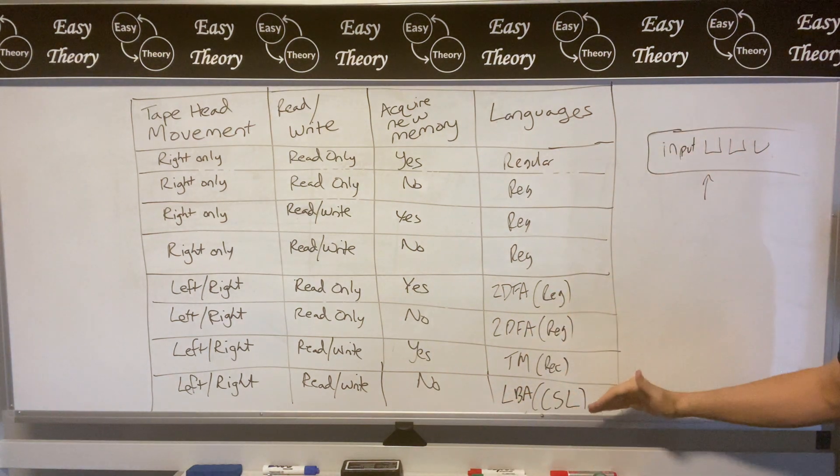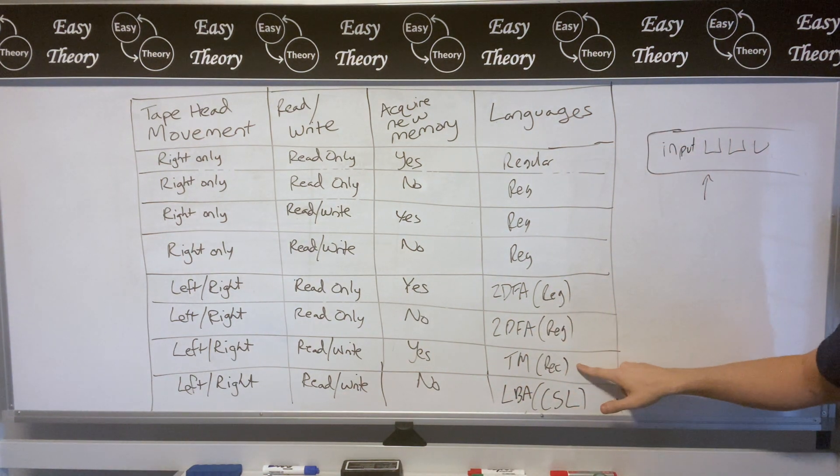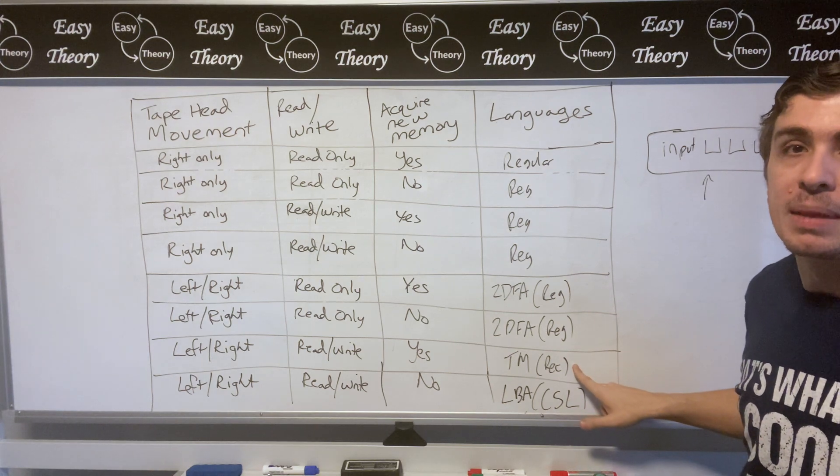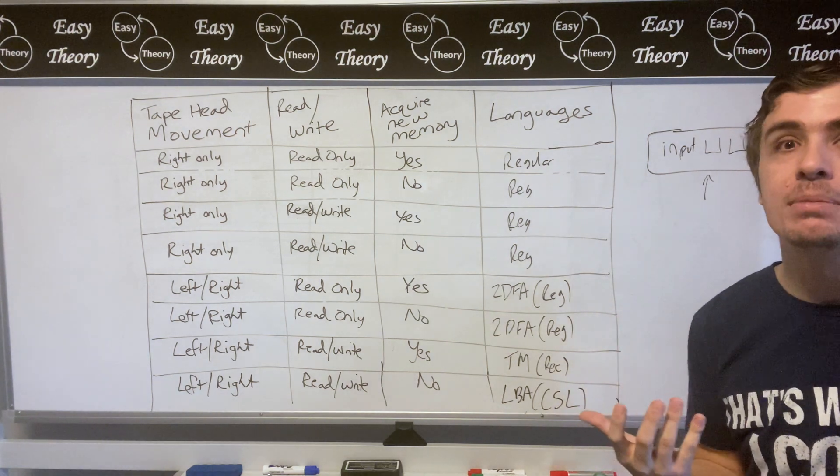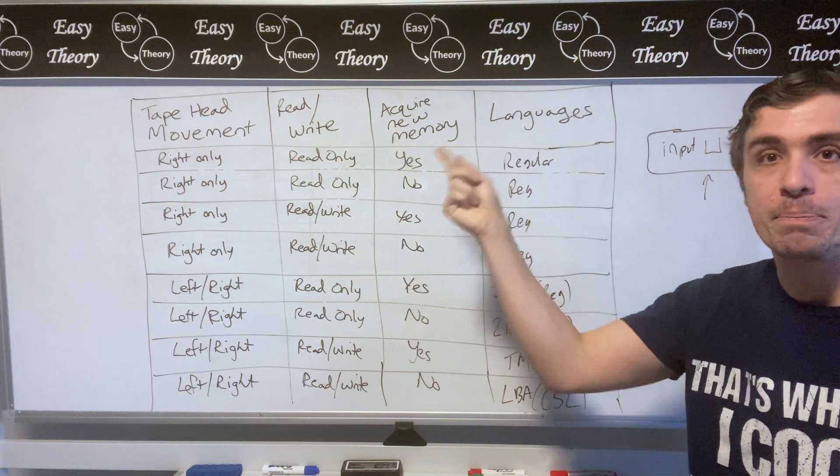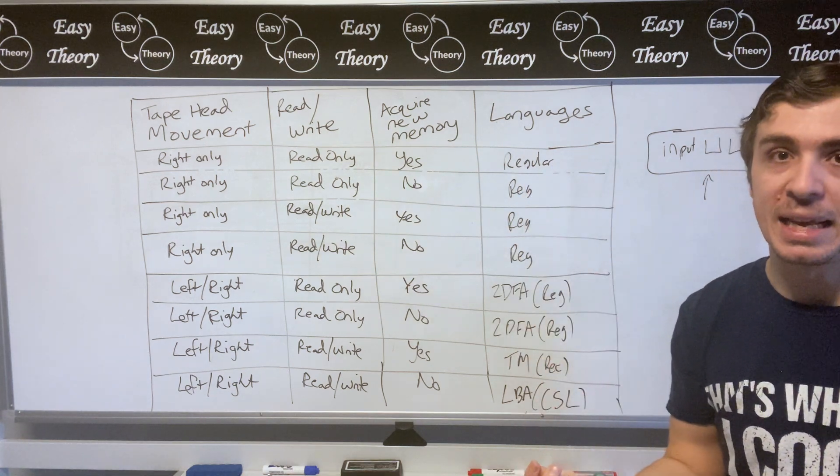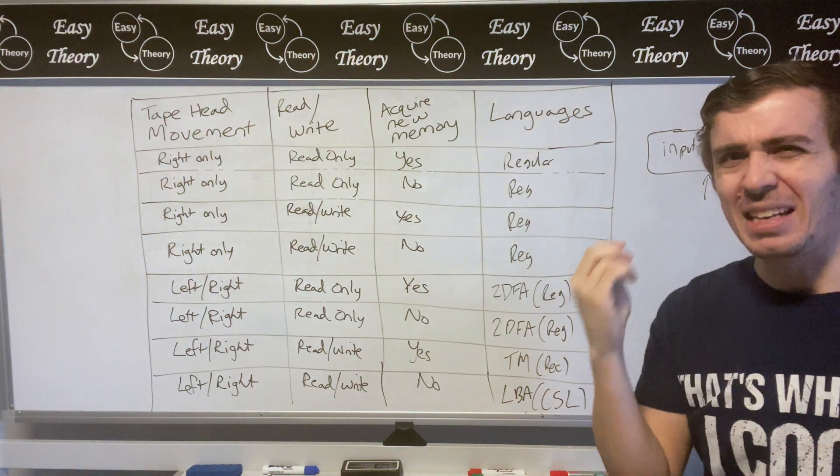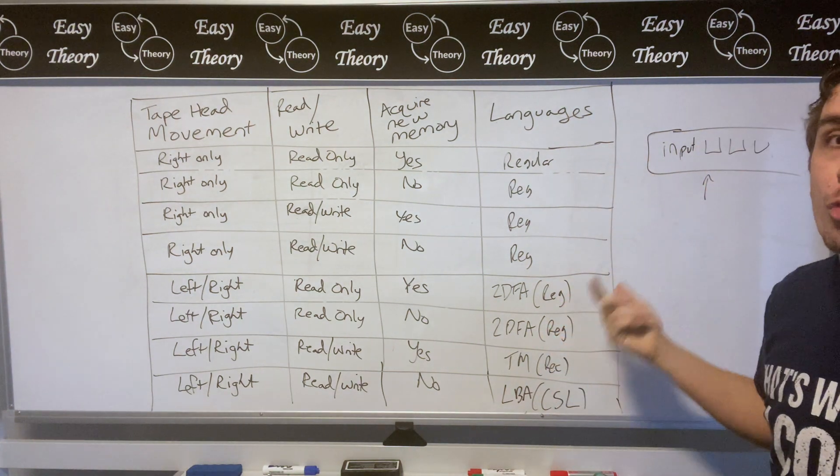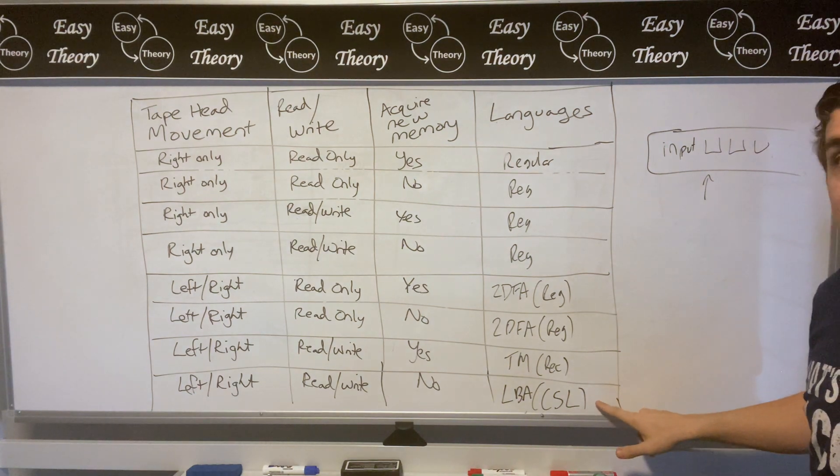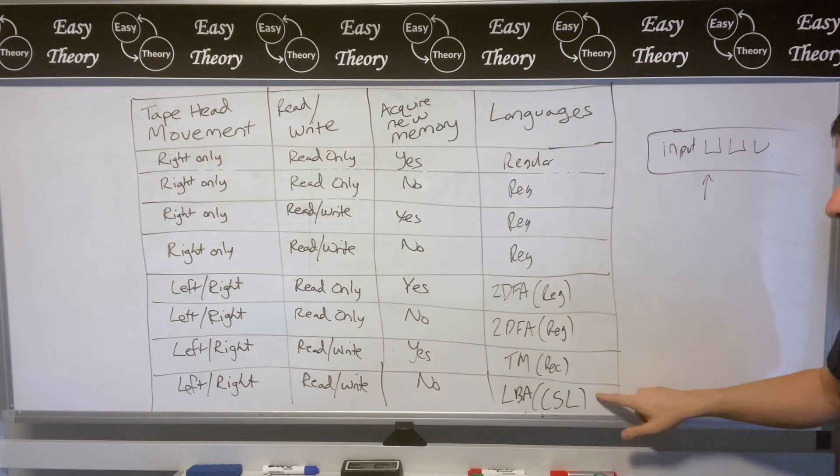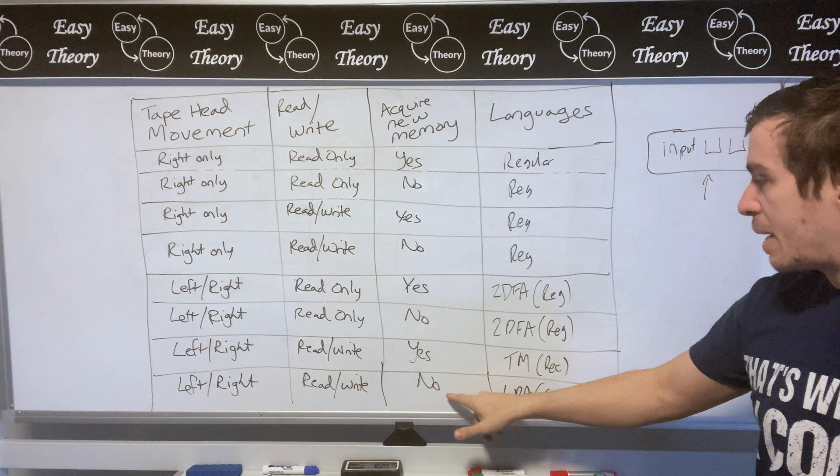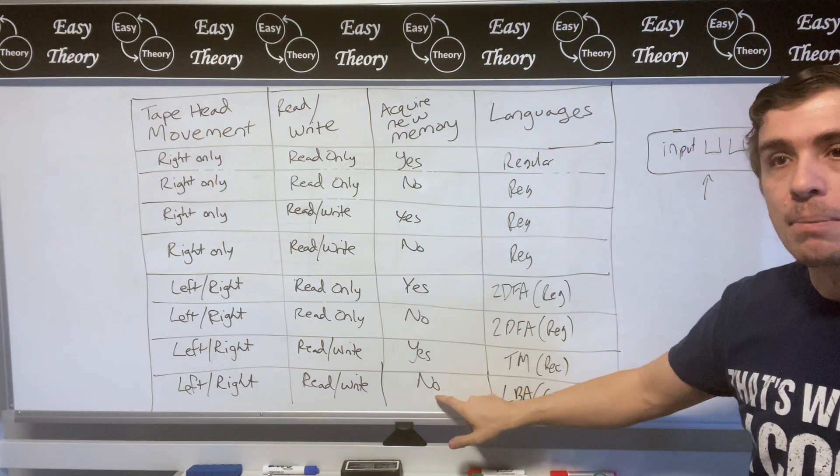So out of all eight possibilities only one of them was something related to Turing machines. So in some sense all three of these different behaviors have to work in tandem in order to get these particular languages. Although it's not completely true because six of these are regular and the one that's not a Turing machine or regular is something in the middle because of this ability to acquire new memory.